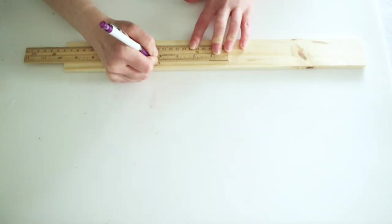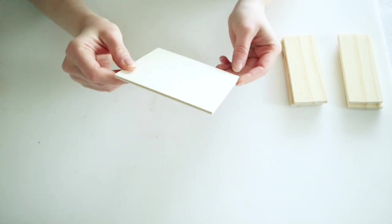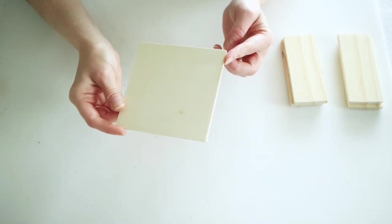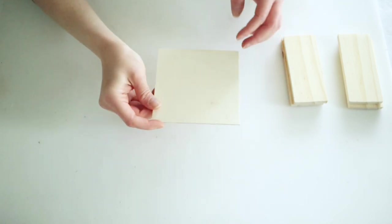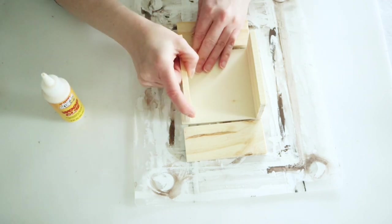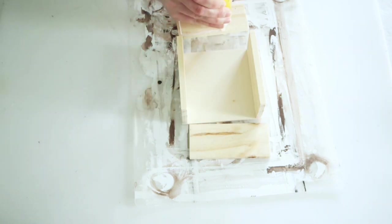While those are drying, I'm measuring out four equal pieces of wood and using my miter box saw to cut those. Then I grabbed one of these little wood squares from Dollar Tree—they come in a pack of five or six—and that's what I'm using for the bottom.